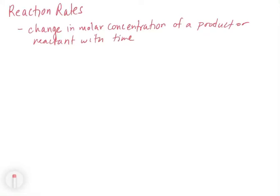In this video, we're going to talk about reaction rates. And exactly as it sounds, a reaction rate is how quickly a reaction takes place. To put a finer point on that, we have to be able to measure something in order to tell how quickly a reaction is going. The way that we do that is we can measure the concentration change of either a product or a reactant with respect to time.